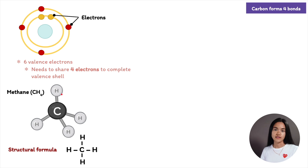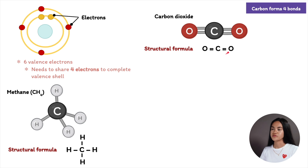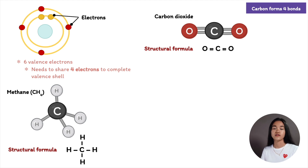Another example is carbon dioxide, where a single carbon atom combines with two oxygen atoms by double covalent bonds. In the structural formula, each line represents a pair of shared electrons, and both the carbon atom and the two oxygen atoms complete their valence shells. That's how carbon forms four covalent bonds with other atoms.